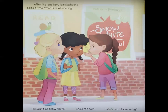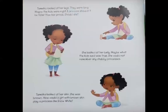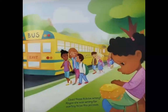After the audition, Tamika heard some of the other kids whispering. 'She can't be Snow White — she's too tall. She's much too chubby. And she's too brown.' Tamika looked at her legs — they were long. Maybe the kids were right. A princess shouldn't be taller than her prince, should she? She looked at her belly; maybe what the kids said was true. She could not remember any chubby princesses. Tamika looked at her skin — she was brown. How could a girl with brown skin play a princess like Snow White? Could these kids be wrong? Maybe she was wrong for wanting to be the princess.